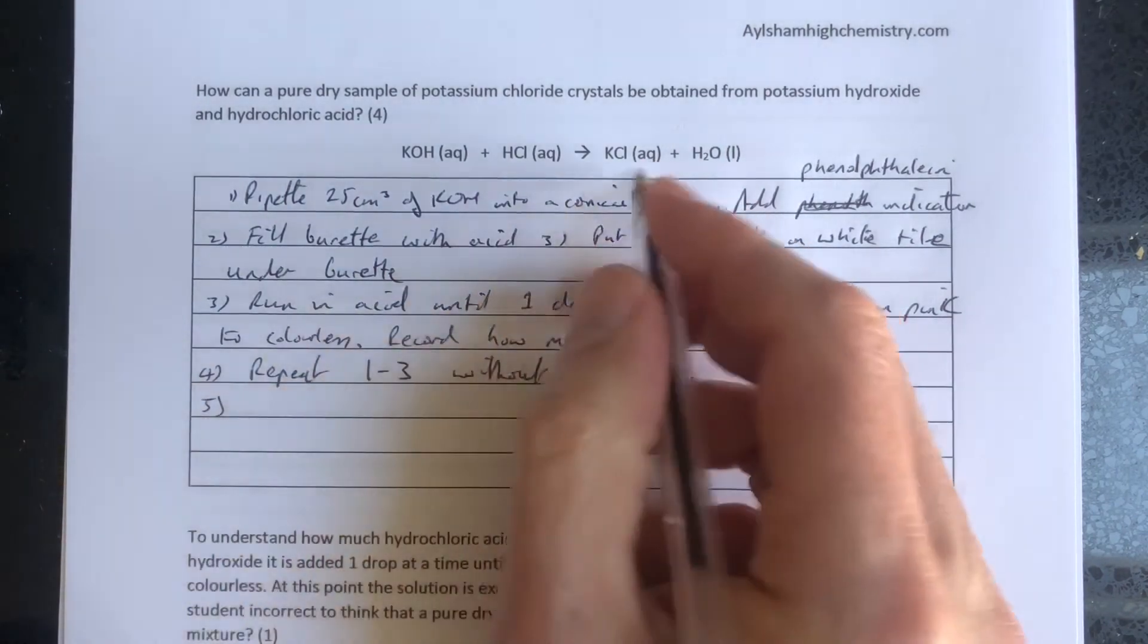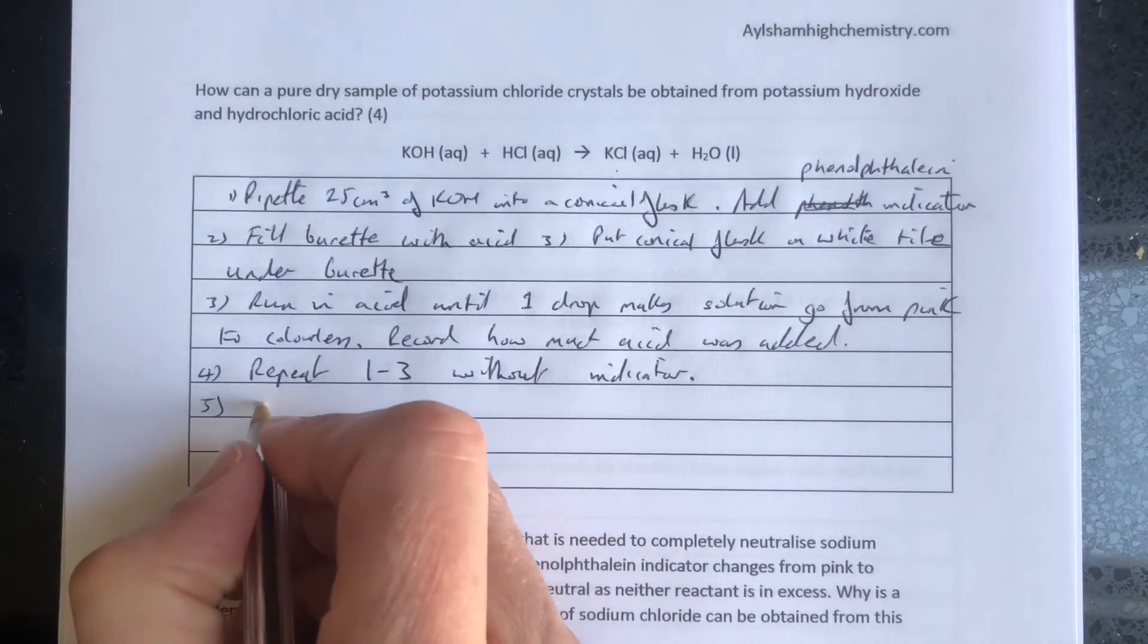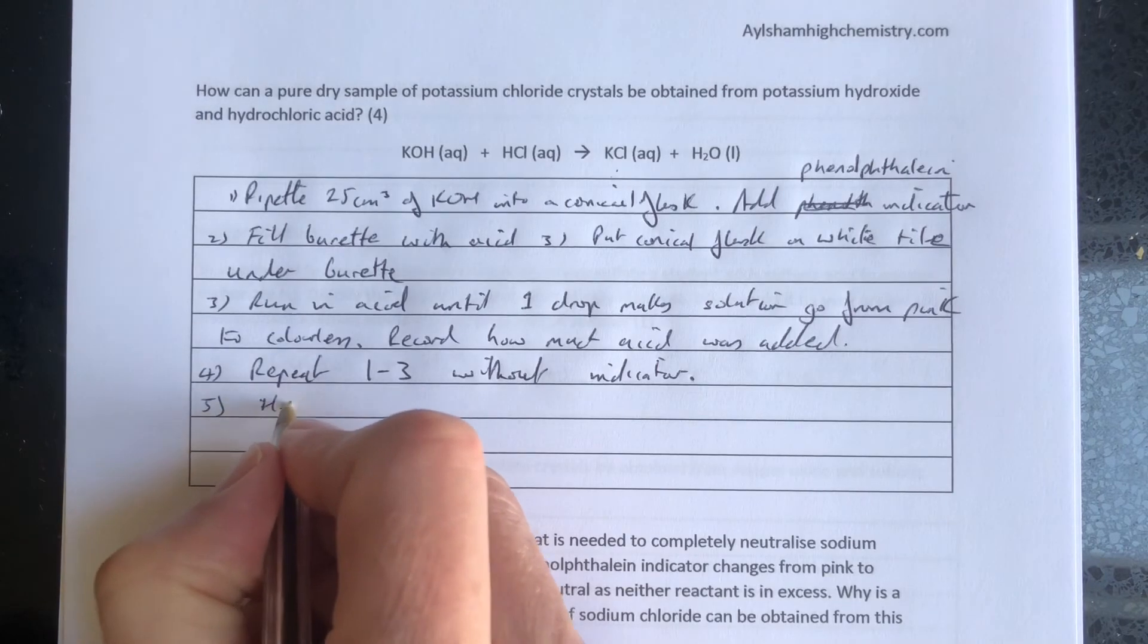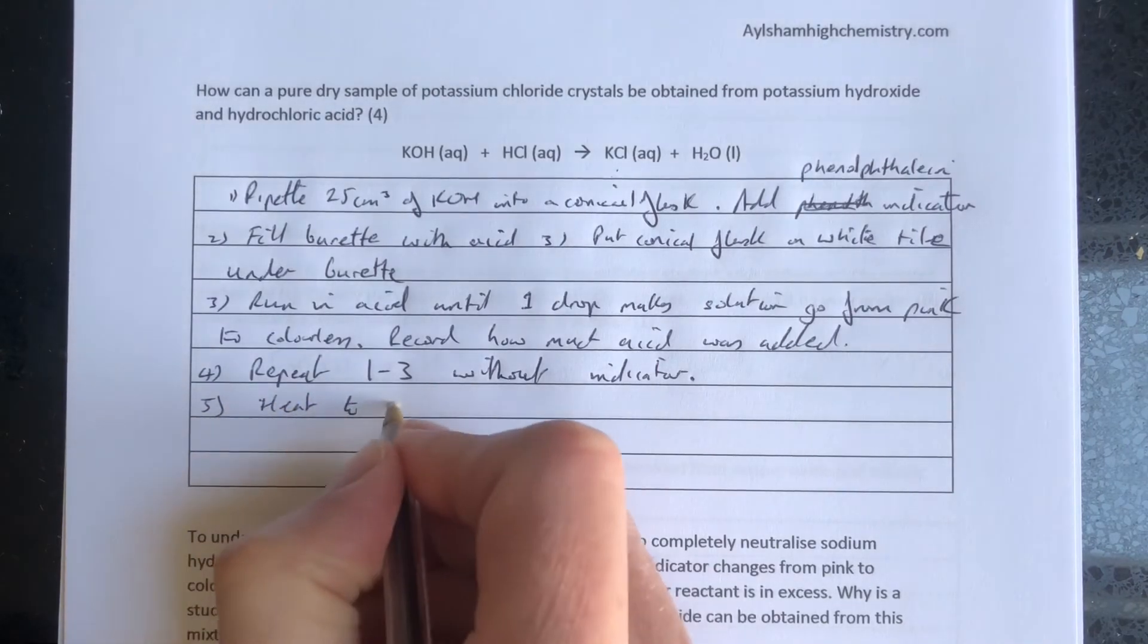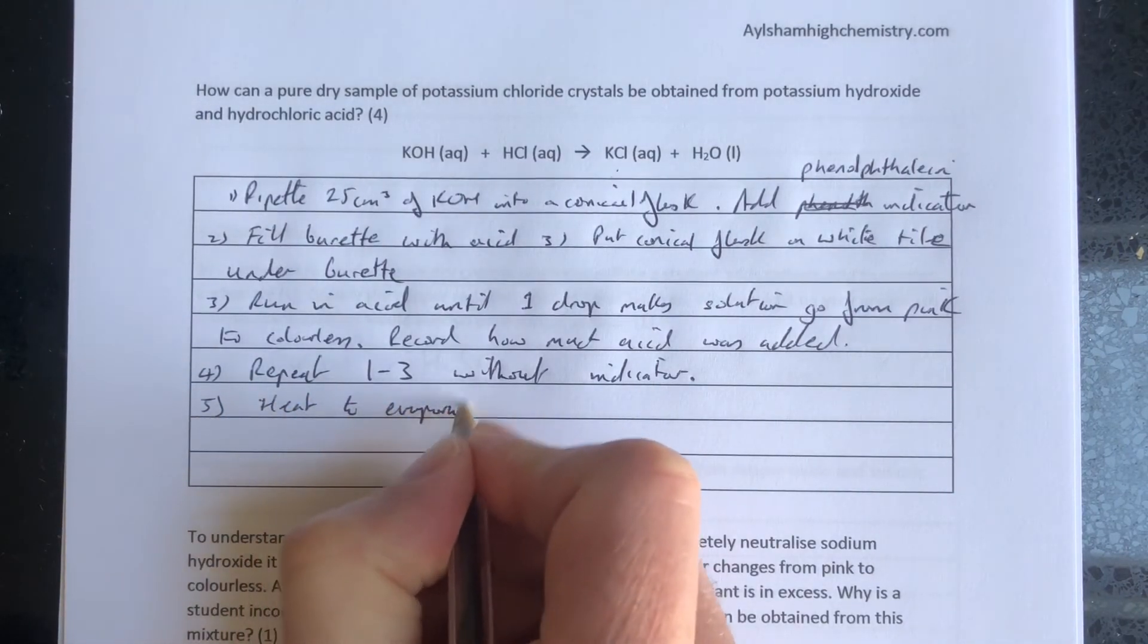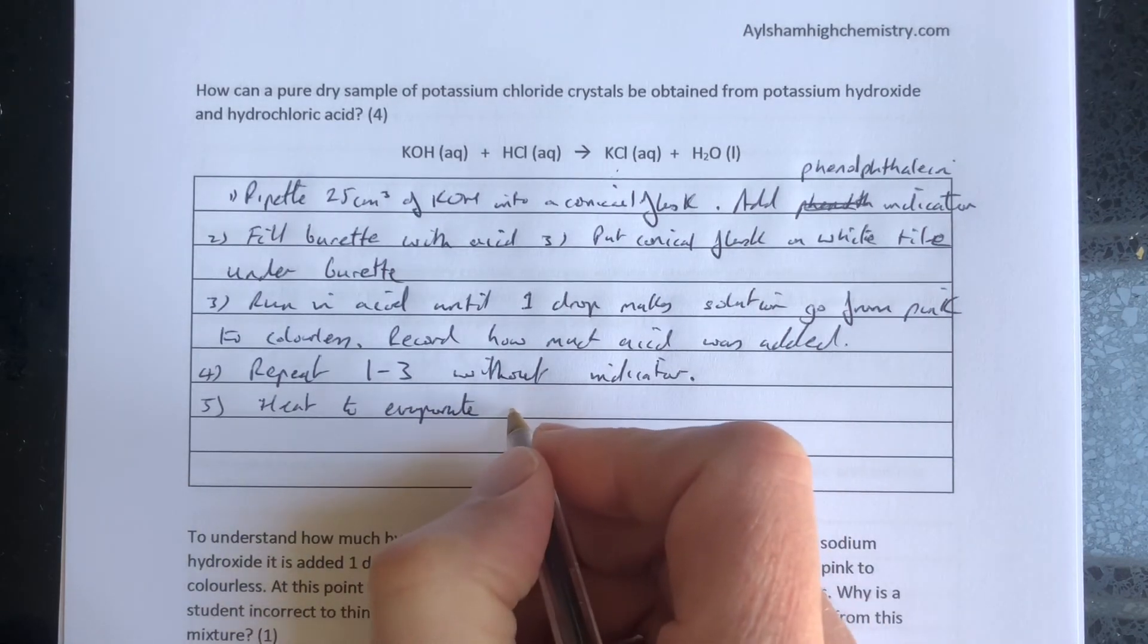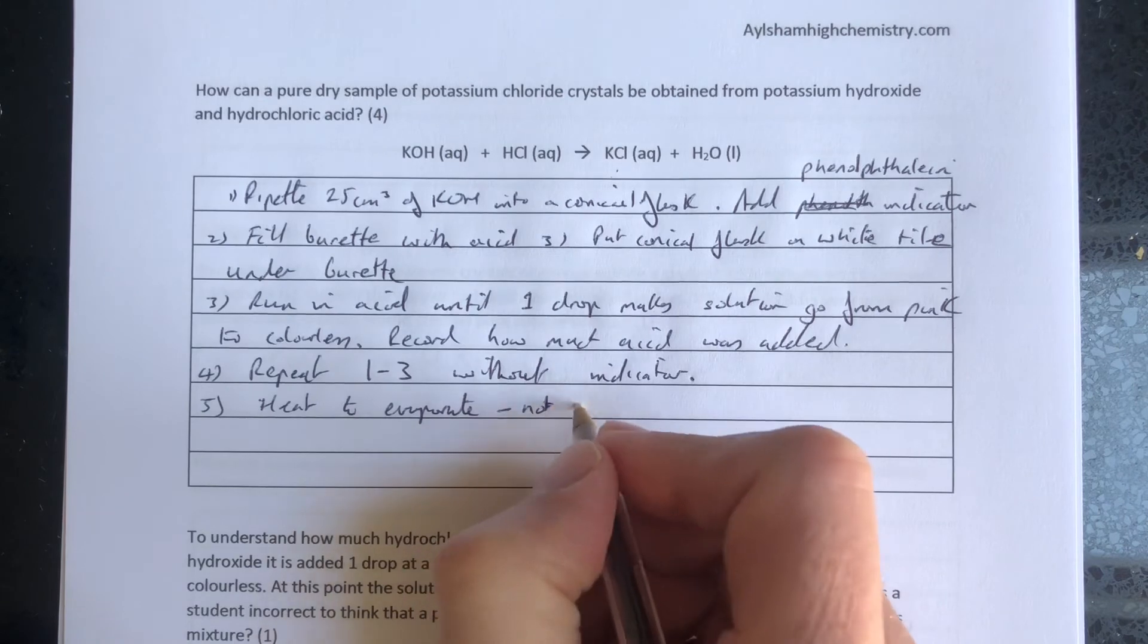Now we have pure potassium chloride and water. Step five: heat to evaporate the water, but not to dryness.